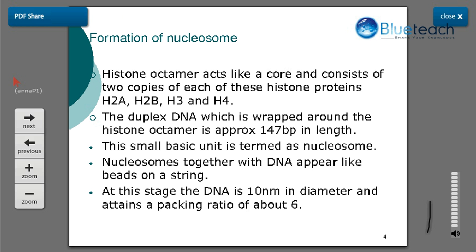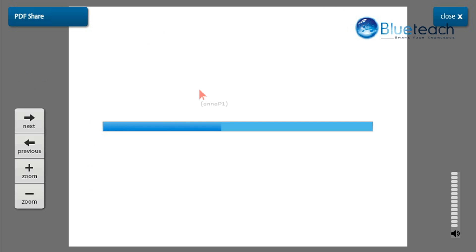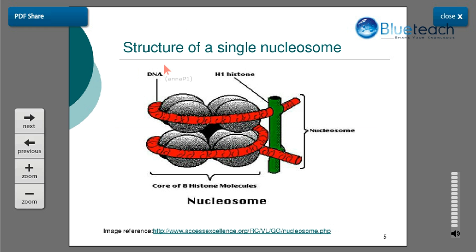Looking at the structure of a single nucleosome: the histone octamer has 8 molecules, and the DNA is wrapped around it — one full turn and then three-fourths of another turn. The H1 histone acts as a linker histone, giving stability to the DNA structure and helping with further levels of organization. The linker DNA is the DNA segment joining adjacent nucleosomes, made up of approximately 20 to 60 base pairs.